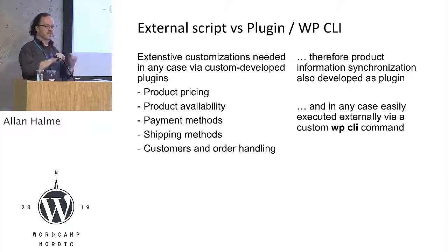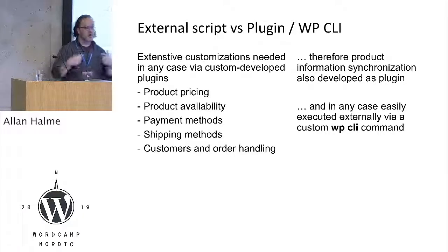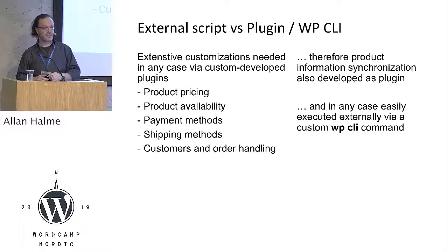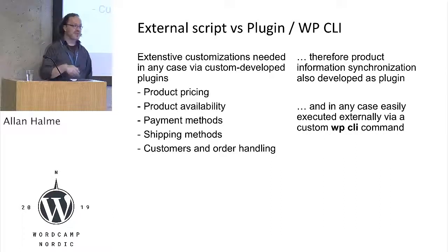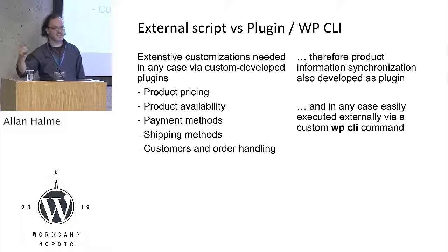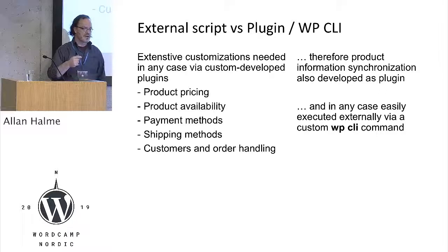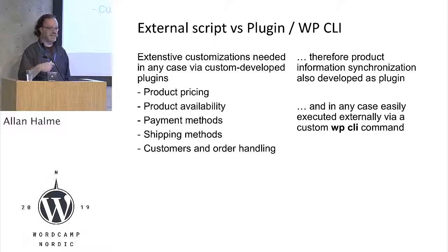Getting the product information from Perfion into the store is a one-off operation at deployment, but more importantly it must be updated constantly on an ongoing basis. The product information is actually updated daily within the company — spelling mistakes may be corrected, texts may be changed, and new products are created. In addition to the current product selection, upcoming products not yet on sale are also managed and maintained in the system, previewed by staff. So we need an ongoing system for daily updates.